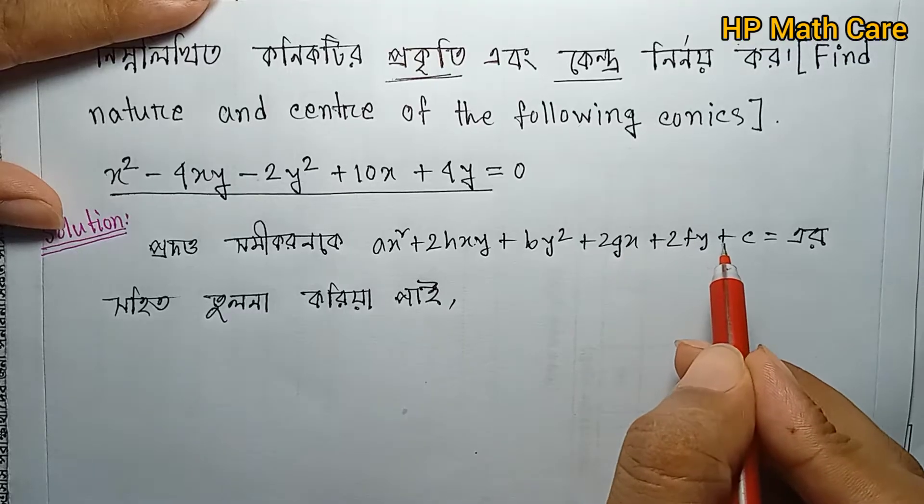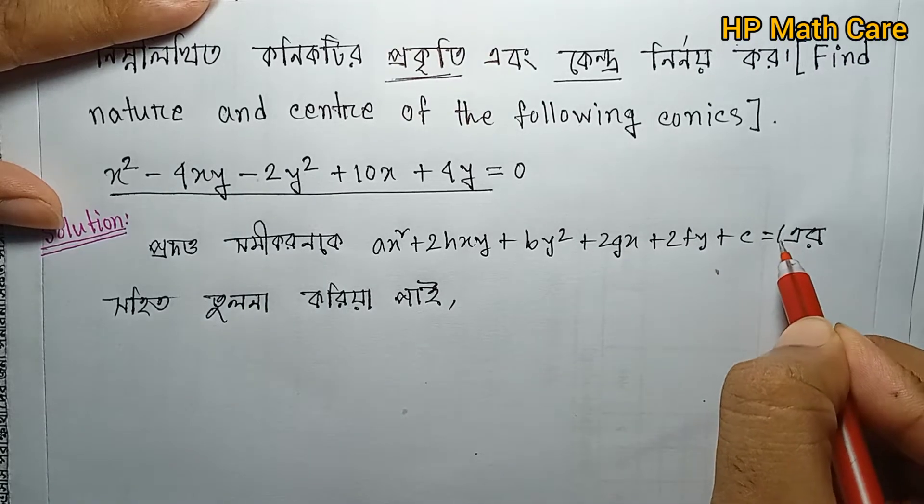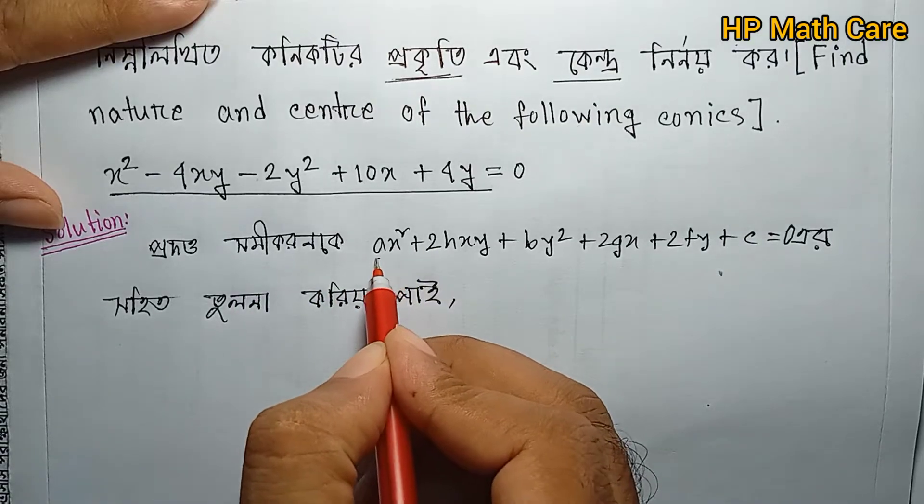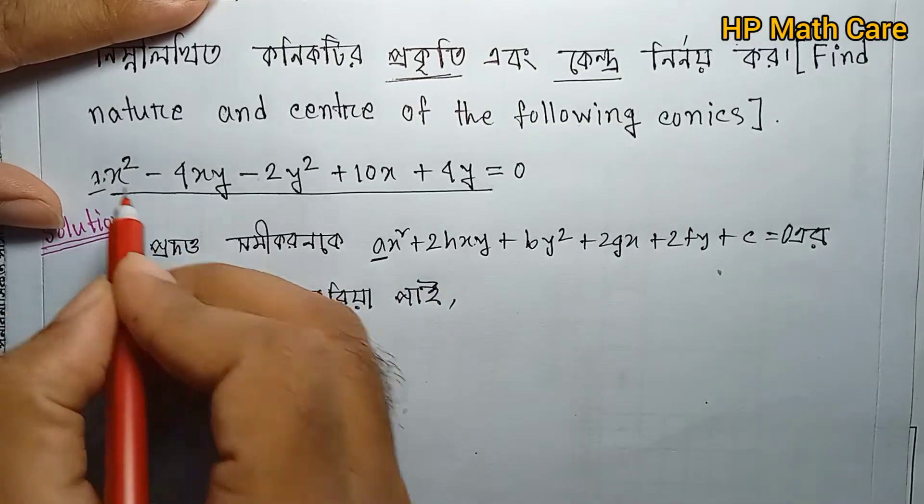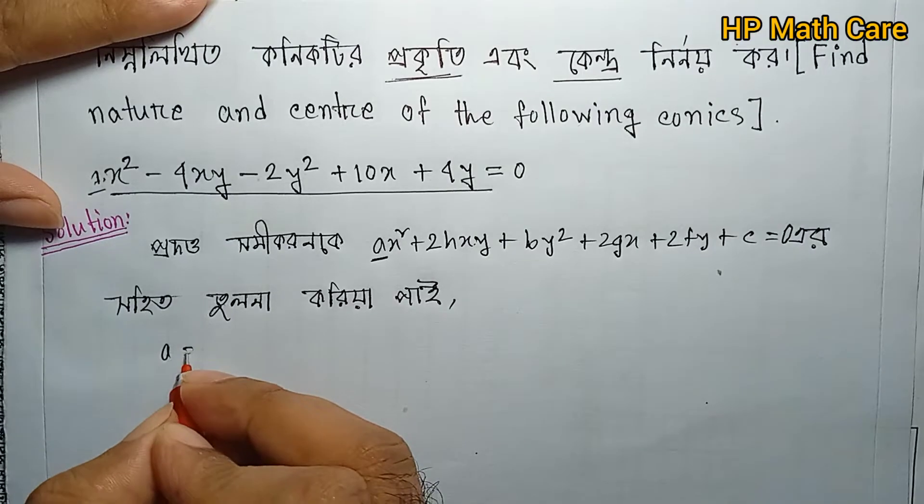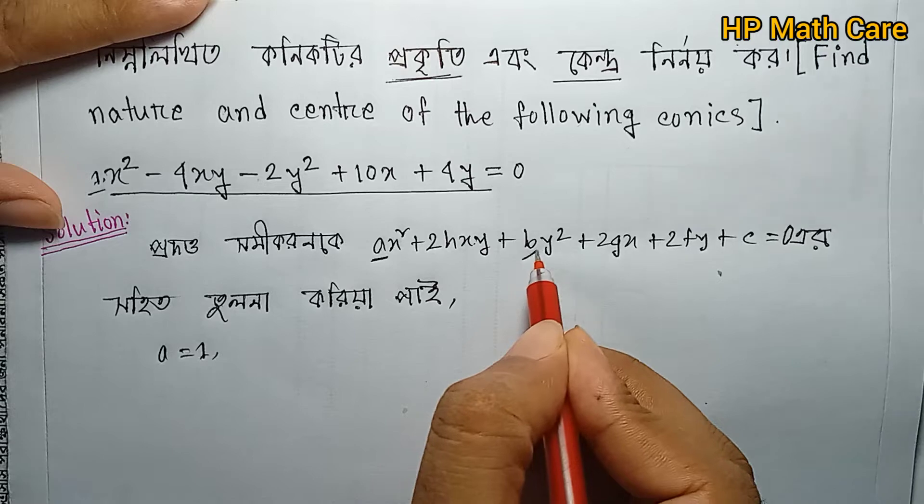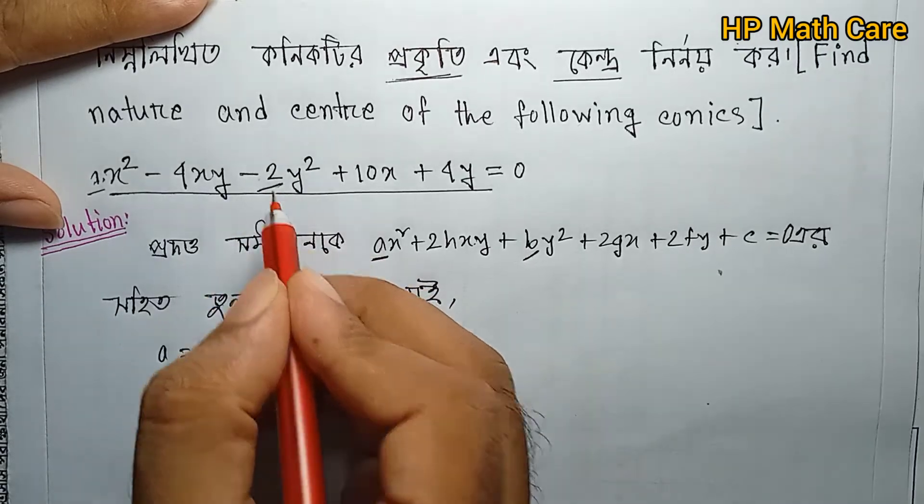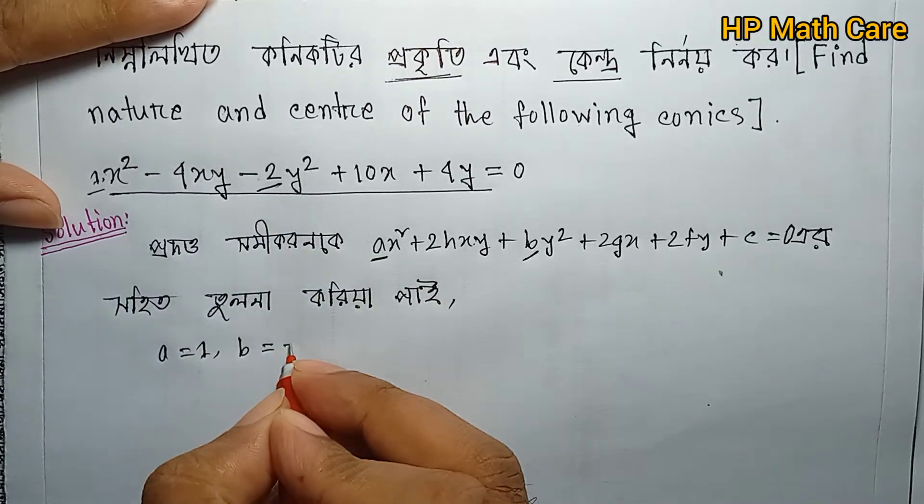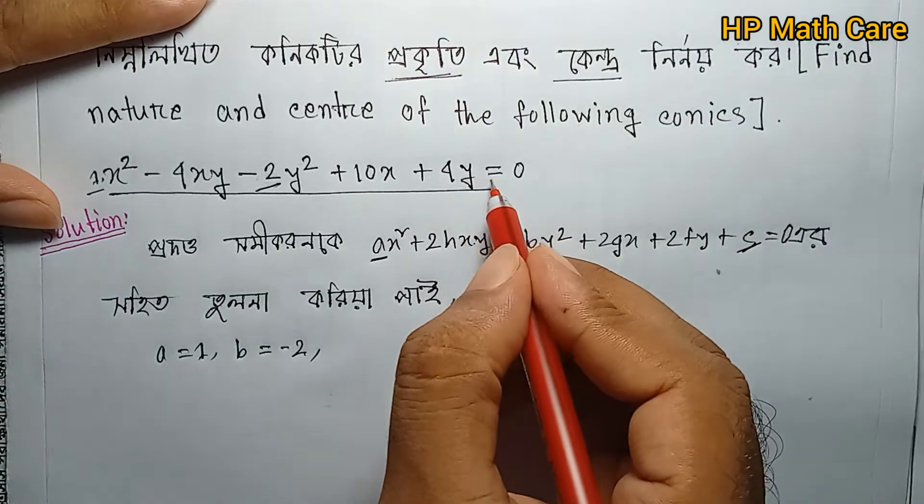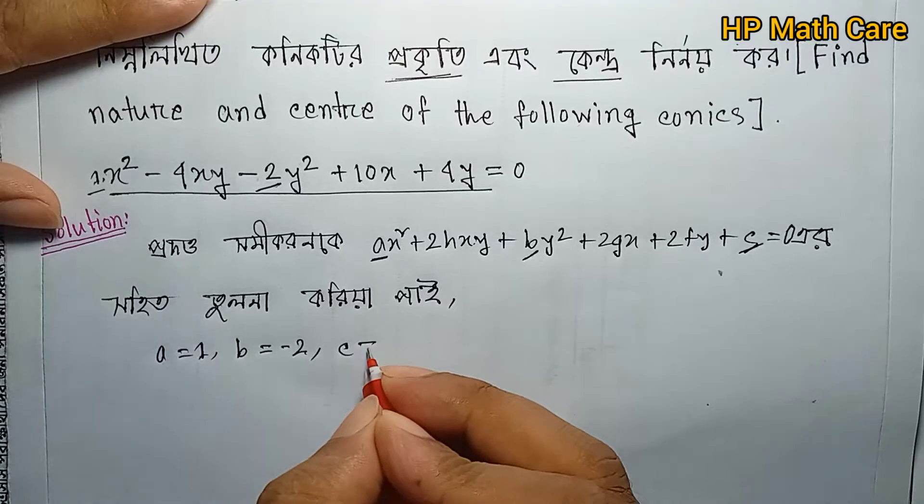The general equation is ax² + 2hxy + by² + 2gx + 2fy + c = 0. Comparing coefficients: a = 1, b = -2, c = 0, h = -2, g = 5.